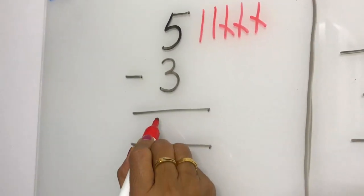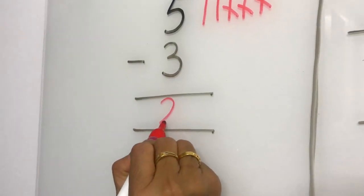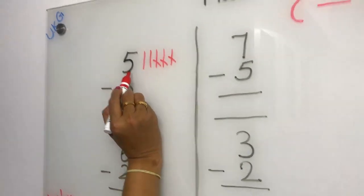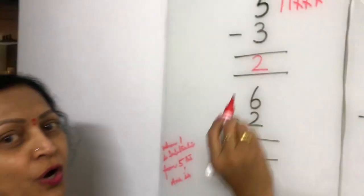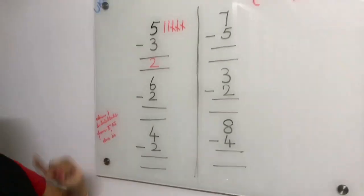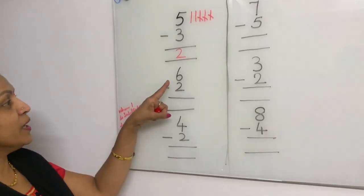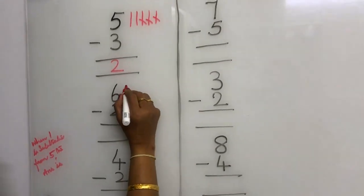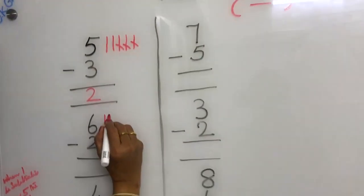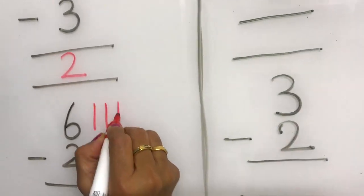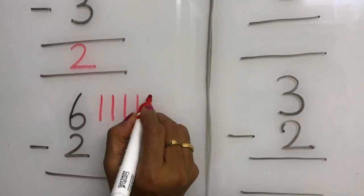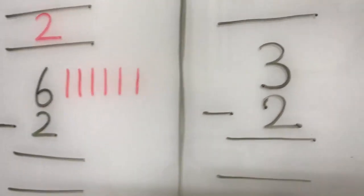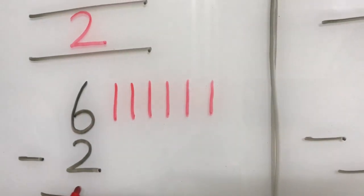Two is the answer. When three is subtracted from five, the answer is two. Now what is this number? Number six. We have to put six small standing lines: one, two, three, four, five, six. In these six lines, we have to take out two.